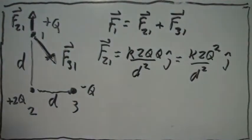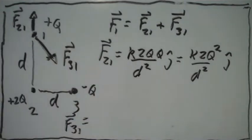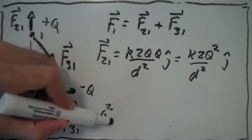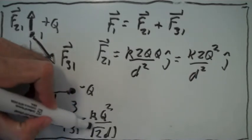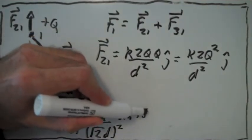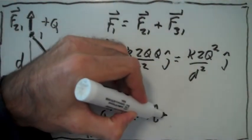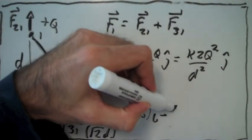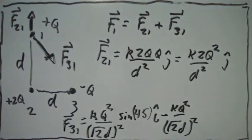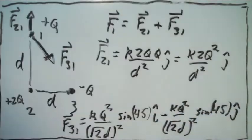The force of charge 3 on charge 1 has components in both x and y. The x-component is given by k times the product of the two charges divided by the distance between them squared, times sine of 45, in the i direction. It also has a component in the negative y direction: k times the product of the charges divided by the distance squared, times sine of 45, in the negative j direction.